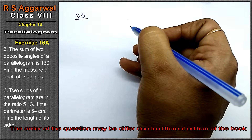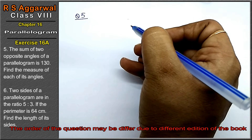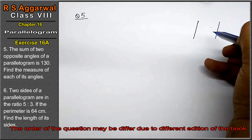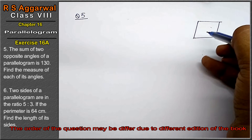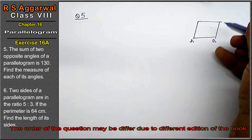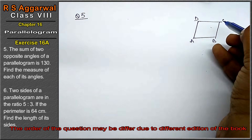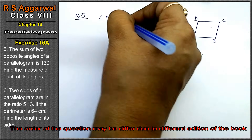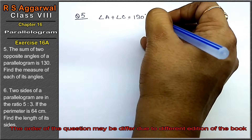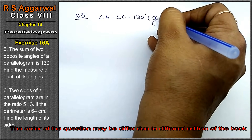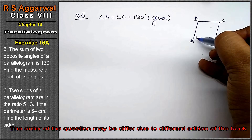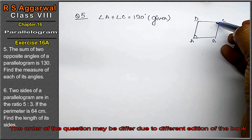Question number 5: the sum of 2 opposite angles of a parallelogram is 130 degrees. I'm making a parallelogram with vertices A, B, C, and D. The sum of opposite angles of a parallelogram is 130 degrees — this is given to us. We know that opposite angles of a parallelogram are equal.